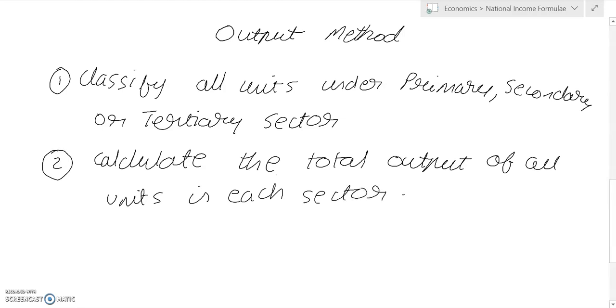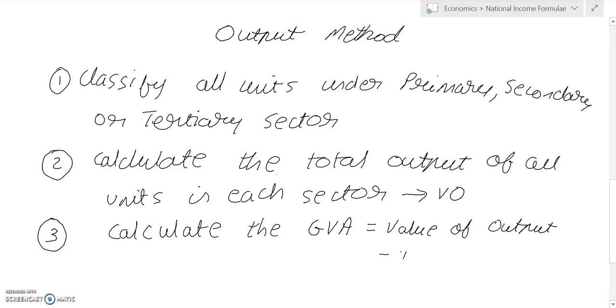That will give us the value of output. The third step will be to calculate the gross value added of each sector, and the formula for gross value added is value of output minus intermediate consumption.